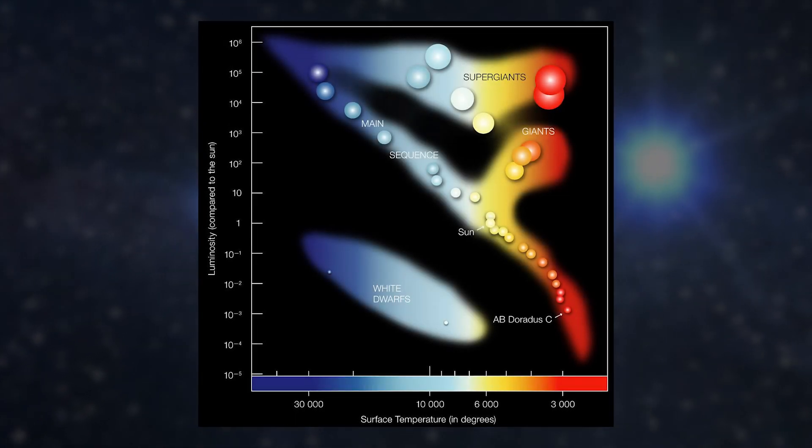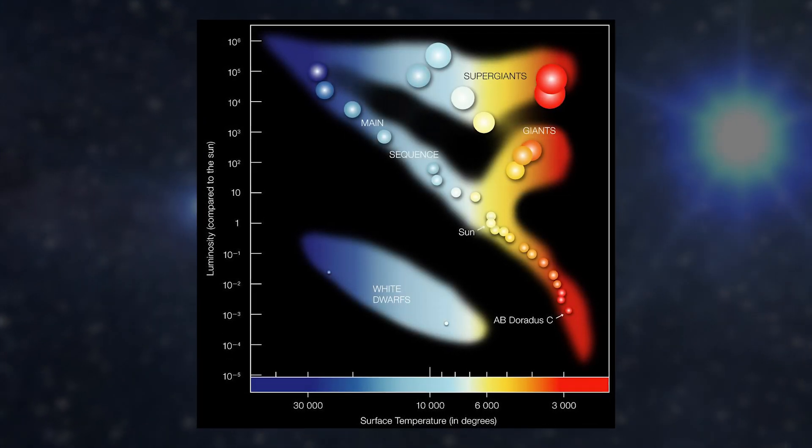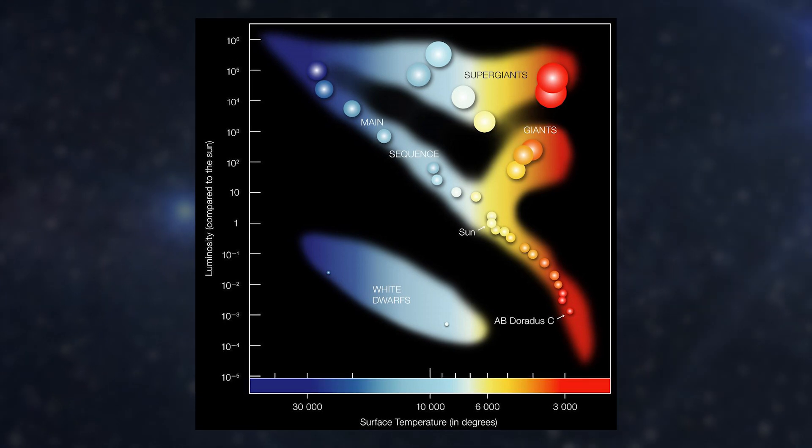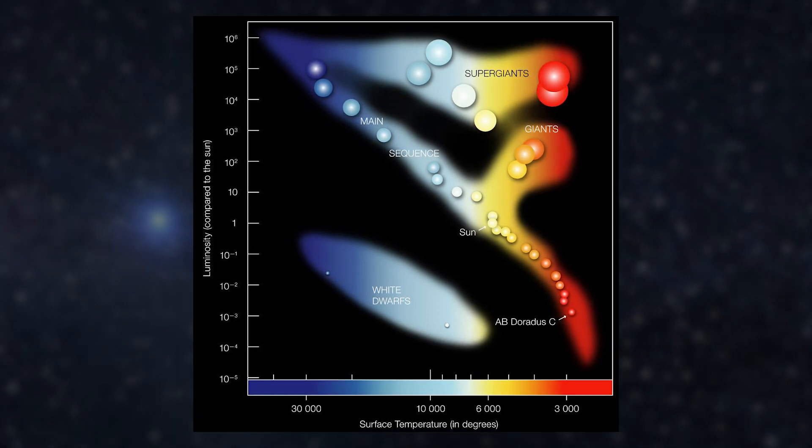This is the Hertzsprung-Russell diagram, one of the primary ways astronomers classify stars. It compares them based on luminosity and surface temperature.